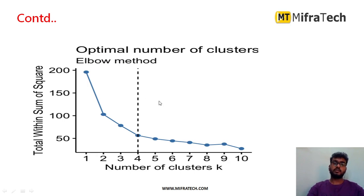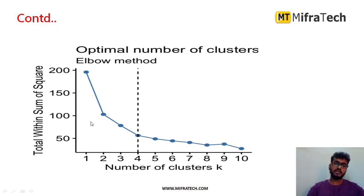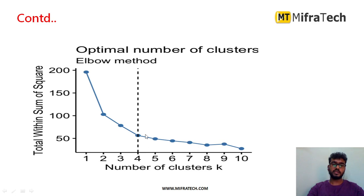To get a better result we need to choose an optimal number of clusters — the optimal K value. Different methods exist for this, and one of the best is the elbow method. In the elbow method, as the number of clusters K increases, the total within-cluster sum of squares decreases. The point at which it starts decreasing gradually — the elbow point — is taken as the optimal K. In this graph, using the elbow method, K equals 4 is identified as the optimal number of clusters.